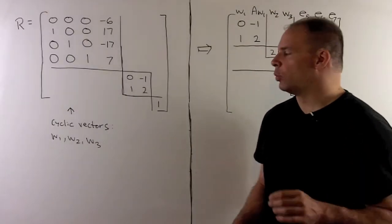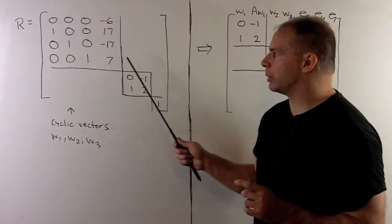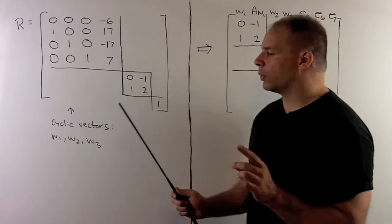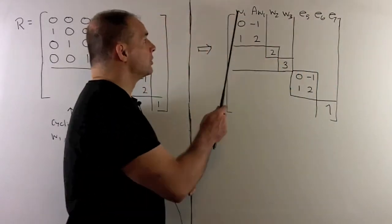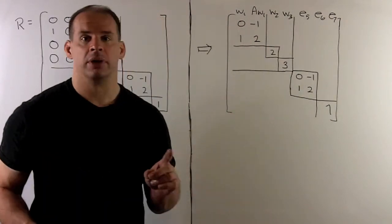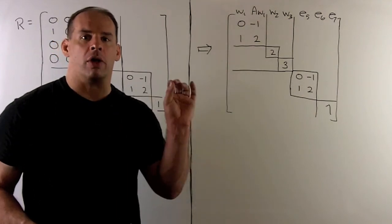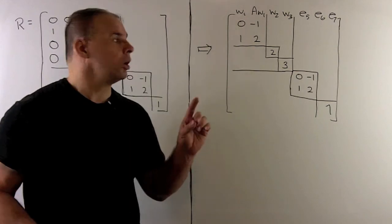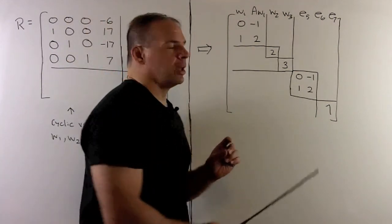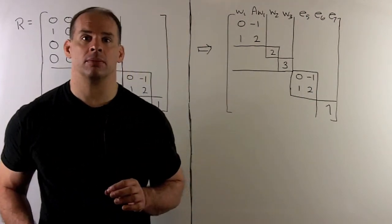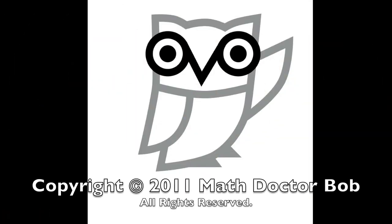Putting things together, we found the three vectors that pull apart the four by four block. We don't want to change anything with the other two blocks, so we change basis to W_1, AW_1, W_2, W_3, E_5, E_6, E_7. With that, we recover all the blocks from the original problem. Note we're not going in the same order down the diagonal, but we can fix that by rearranging the order of our basis vectors.